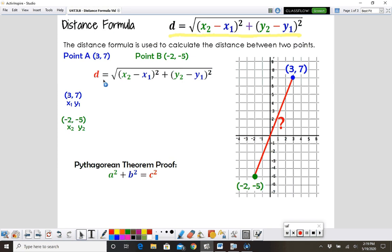The distance is equal to the square root of x2 minus x1. Well, x2 is down here, so negative 2 minus 3. So we can see that here.